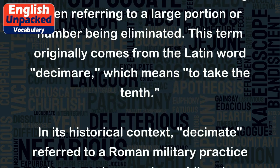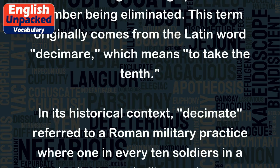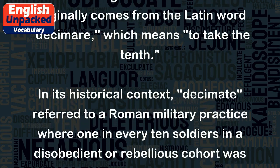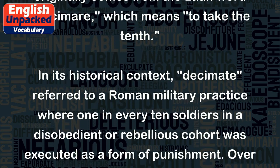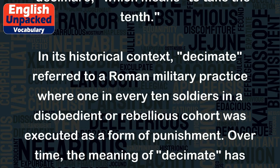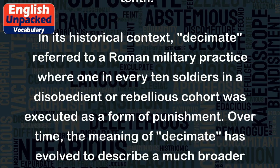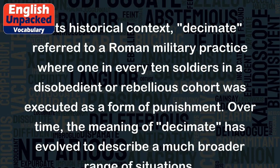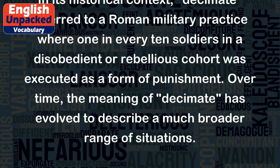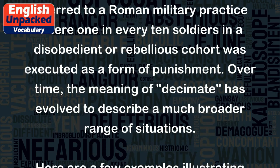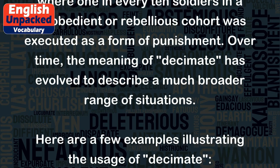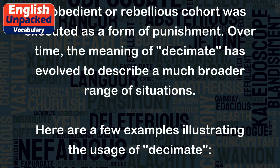In its historical context, decimate referred to a Roman military practice where one in every ten soldiers in a disobedient or rebellious cohort was executed as a form of punishment. Over time, the meaning of decimate has evolved to describe a much broader range of situations.